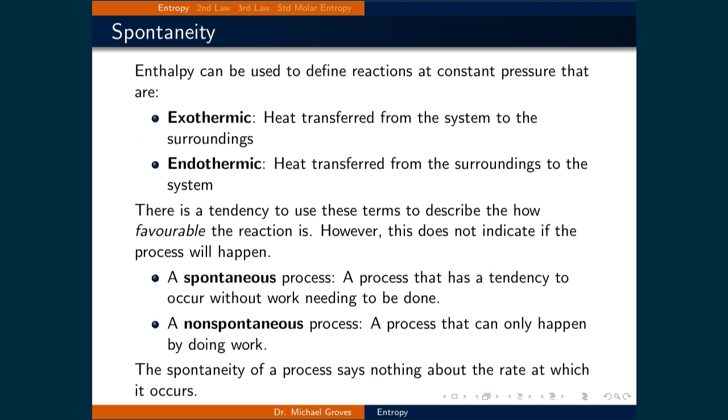Now, entropy is used to define if a process is spontaneous. This is in contrast to enthalpy, where if a process is exothermic or endothermic are properties typically used to describe if a process is favorable. This transfer of heat at constant pressure does not, however, indicate if a process will happen or not.